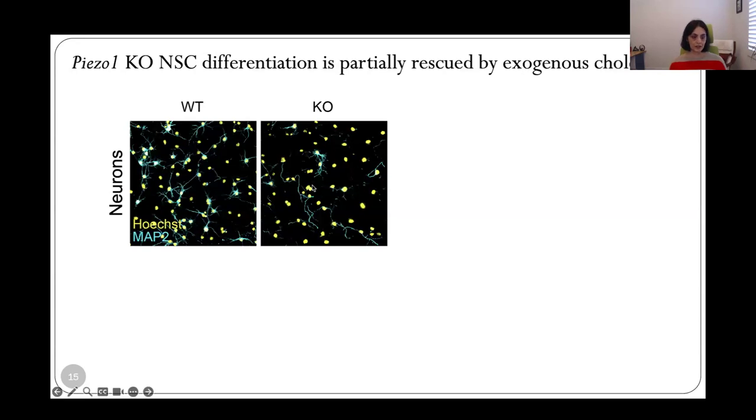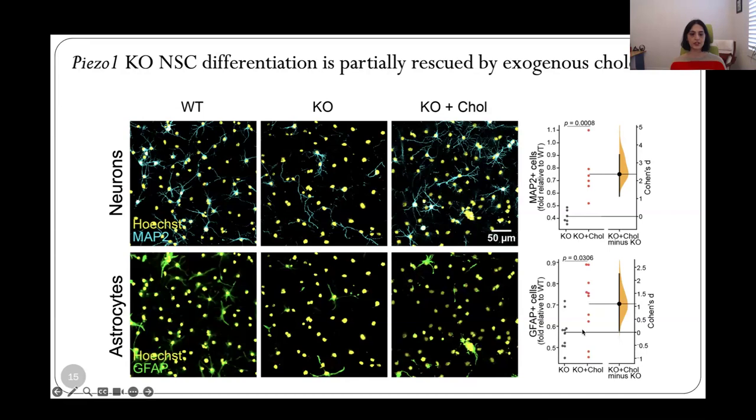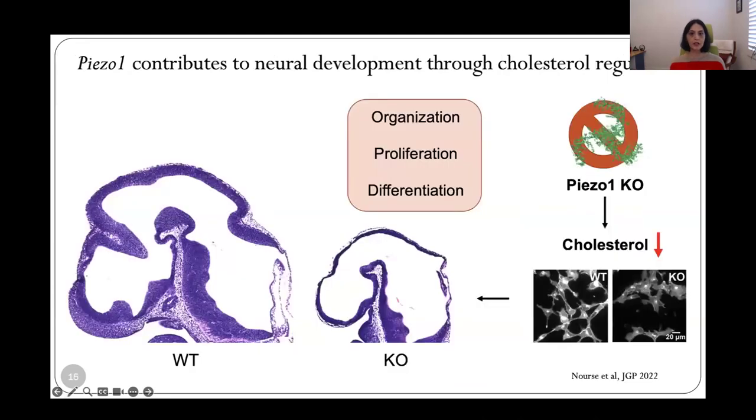So then we asked whether this impacts differentiation. We differentiated the cells in vitro. We differentiated either neurons or astrocytes, and we found that the knockouts have lower neurons differentiating. But then when we did the same differentiation with cholesterol supplemented to the cells, we saw a rescue or a partial rescue of the differentiation into neurons, and we found the same thing for differentiation into astrocytes, where adding back the cholesterol helped rescue the effect. So bringing all of this together, we see that the absence of Piezo1 drastically impacts brain development, and that reduced cholesterol biosynthesis in the neural stem cells appears to underlie at least some of the phenotypes that we observed.